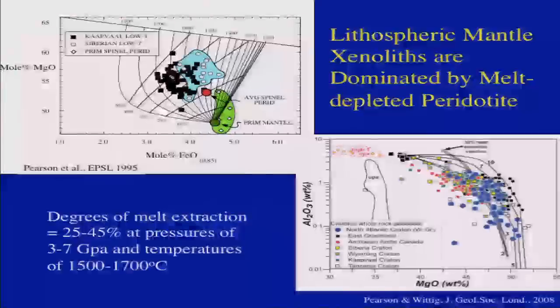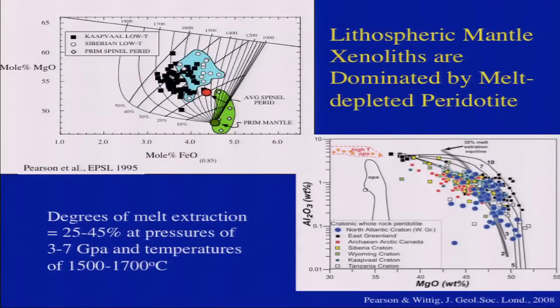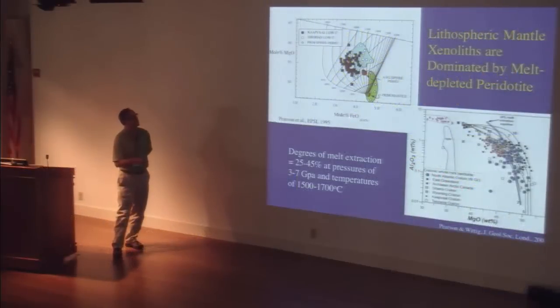Approaching the end of the temperature structure section: the lithospheric mantle is cold, matching seismology, and it got cold rather quickly — it was cold in the Archean. The other prediction from seismology is that the mantle lithosphere should be composed of residues of partial melting, and in fact it is.